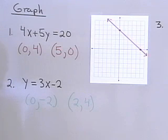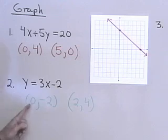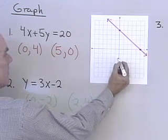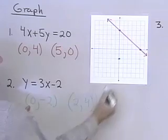Well there's two points. We could find another point if we want, but these should be good enough. When x is 0, y is negative 2. And when x is 2, y is 4.